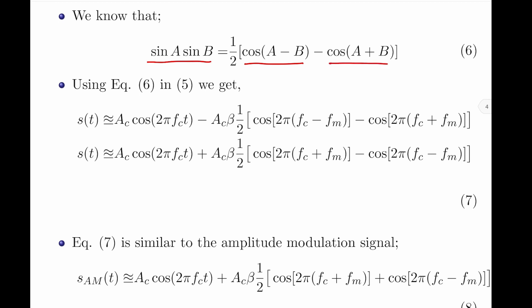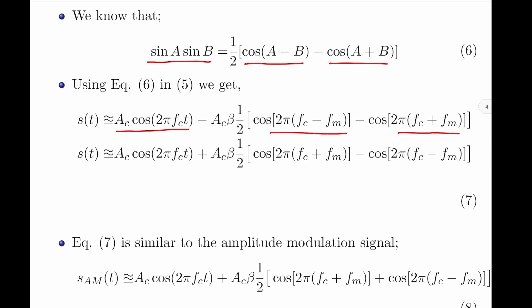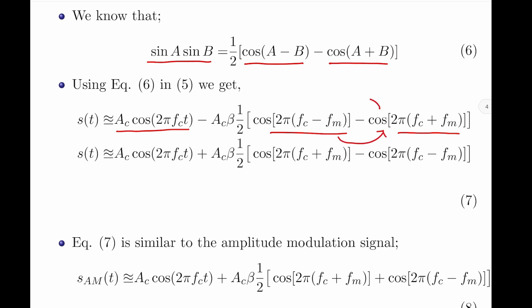The second term in the RHS is in the form of sin(a)·sin(b). We know that sin(a)·sin(b) = (1/2)·[cos(a − b) − cos(a + b)]. Substituting this, s(t) retains the first term as is, and then minus ac·β·(1/2)·[cos(2π(fc − fm)) − cos(2π(fc + fm))]. Interchanging the positions of these two terms to remove the leading minus sign gives a plus for the first bracketed term and a minus for the second.